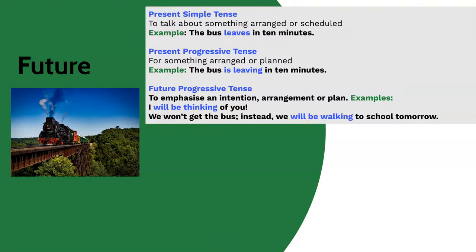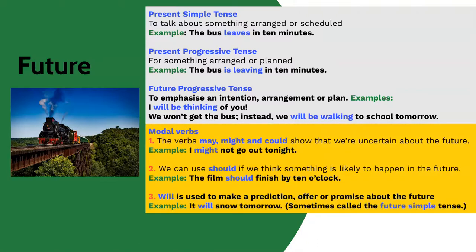A modal verb shows that something is certain or possible, and we can use modal verbs when talking about future events. The verbs may, might and could show that we're uncertain about the future. I might not go out tonight. We can also use should if we think something is likely to happen in the future, but we're not quite sure. For example, the film should finish by 10 o'clock.